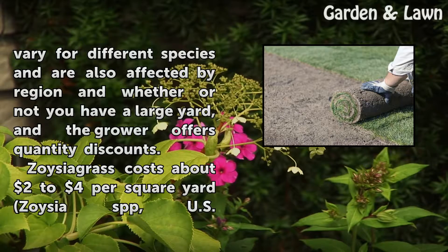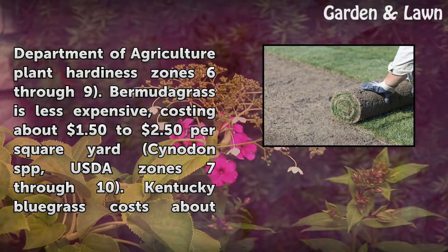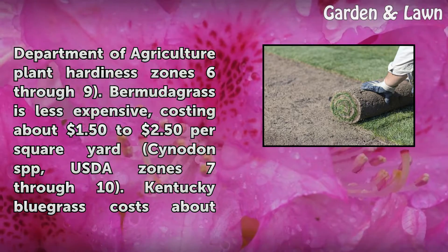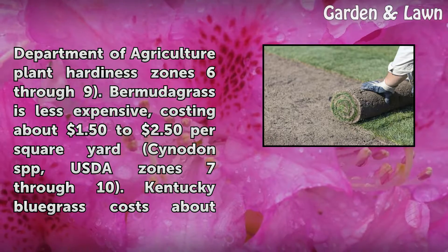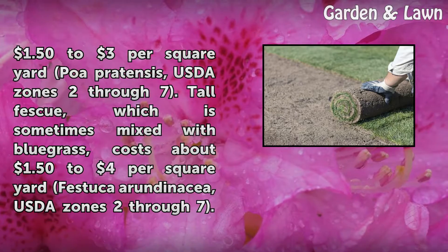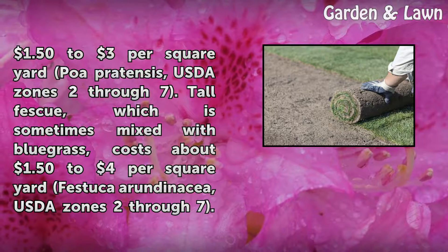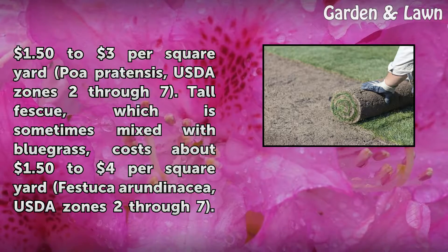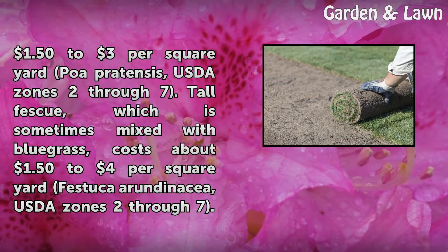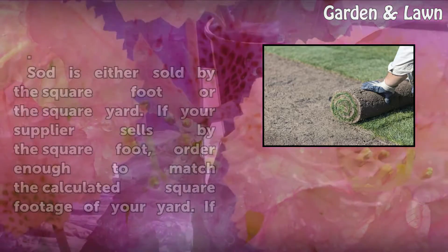Zoysia grass costs about $2 to $4 per square yard (Zoysia spp., USDA Plant Hardiness Zones 6 through 9). Bermuda grass is less expensive, costing about $1.50 to $2.50 per square yard (Cynodon spp., USDA Zones 7 through 10). Kentucky bluegrass costs about $1.50 to $3 per square yard (Poa pratensis, USDA Zones 2 through 7). Tall Fescue, which is sometimes mixed with bluegrass, costs about $1.50 to $4 per square yard (Festuca arundinacea, USDA Zones 2 through 7).